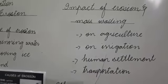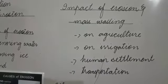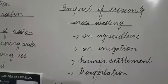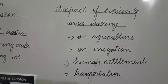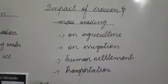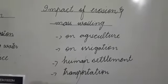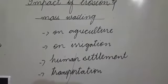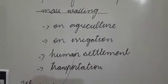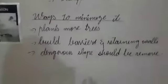Transportation: landsliding of glaciers and rocks blockage the roads and other transportation routes in mountainous areas. These are the impact of erosion and mass wasting on our economy and on our life: agriculture, irrigation, human settlement and transportation.